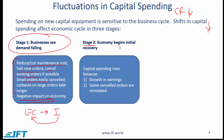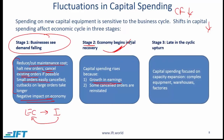In stage 2, the economy begins initial recovery. Capital spending improves because of earnings growth, and some cancelled orders may be reinstated. In stage 3 — late in the cyclic upturn — capital spending is focused on capacity expansion. Companies may run out of capacity, so they invest in larger equipment, expand factory space, or construct new factories. Those larger investments happen here in stage 3.